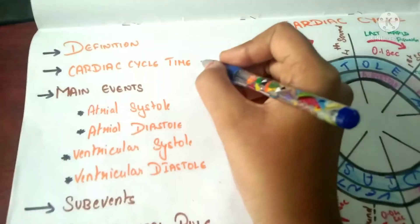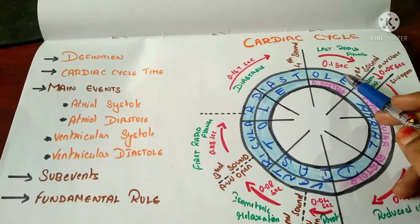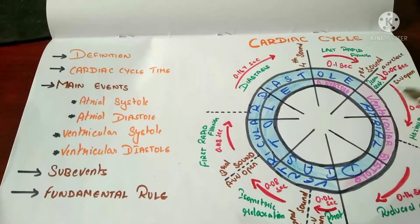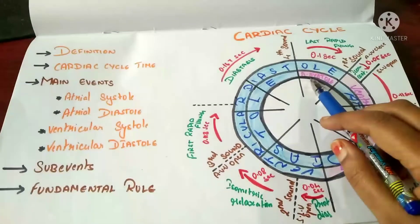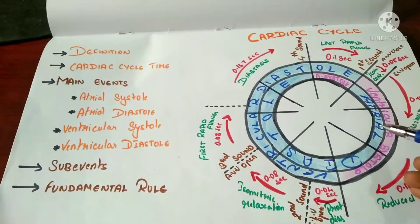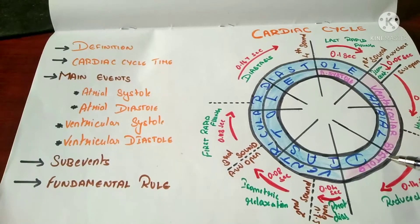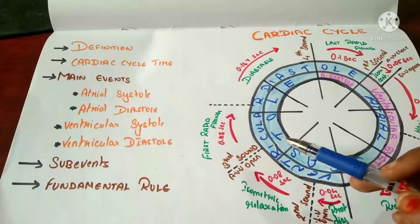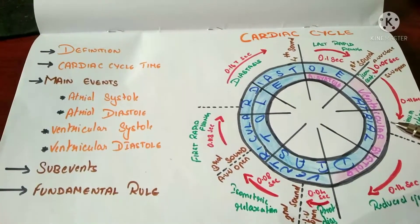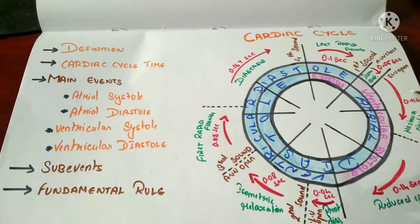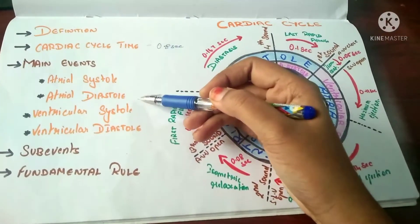Since each part is 0.1 second and there are eight parts, the cardiac cycle time is 0.8 seconds. From this diagram we can determine the timing of the main events: atrial systole is one part — 0.1 second; atrial diastole is seven parts — 0.7 seconds; ventricular systole is three parts — 0.3 seconds; and ventricular diastole is five parts — 0.5 seconds.